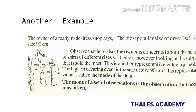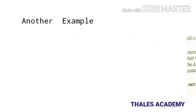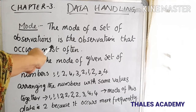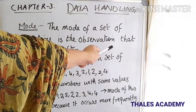This is another representative value for the data. The highest occurring event is the sale of size 90 cm. This representative value is called the mode of the data. The mode of a set of observations is the observation that occurs most often.